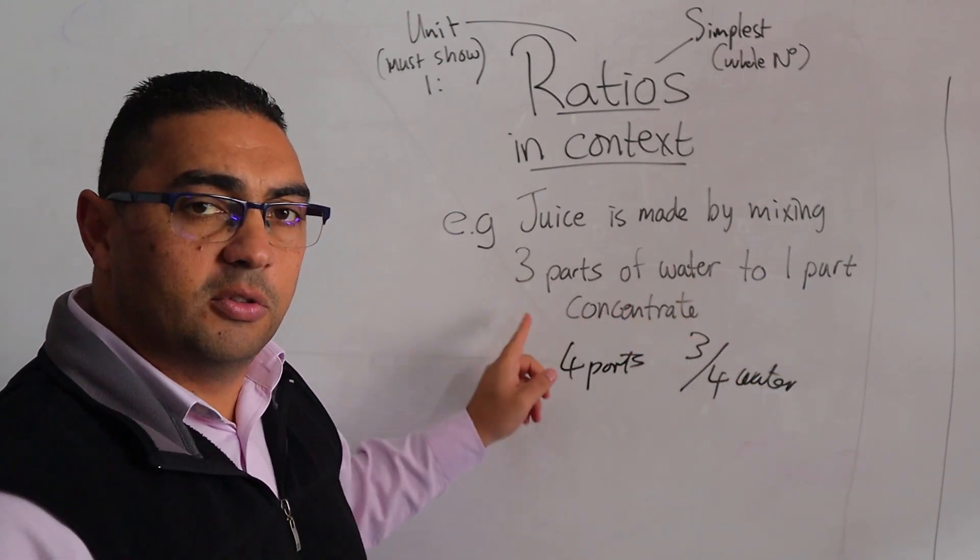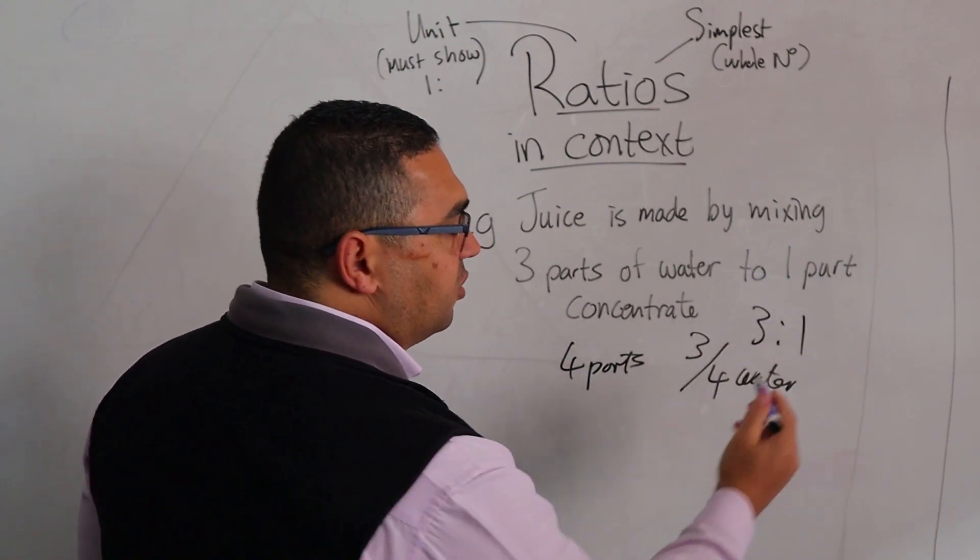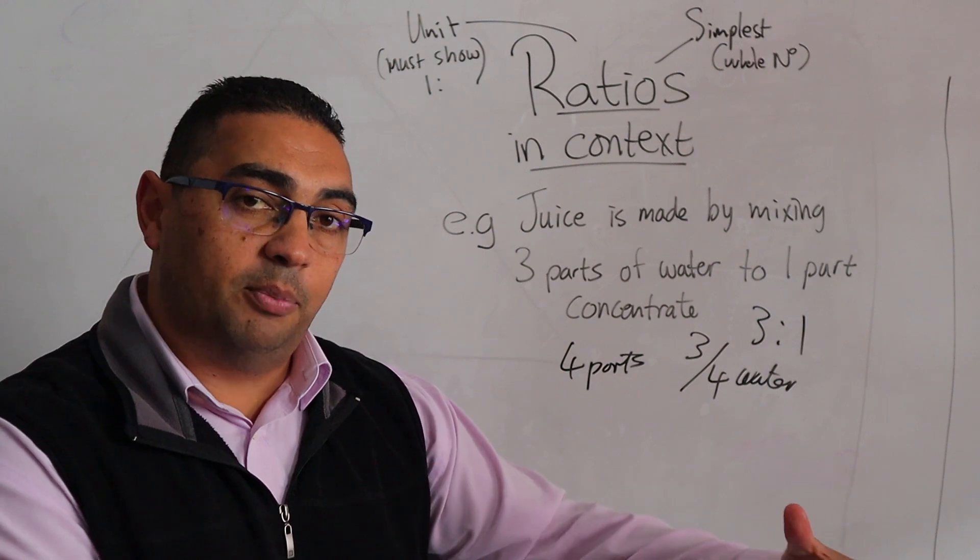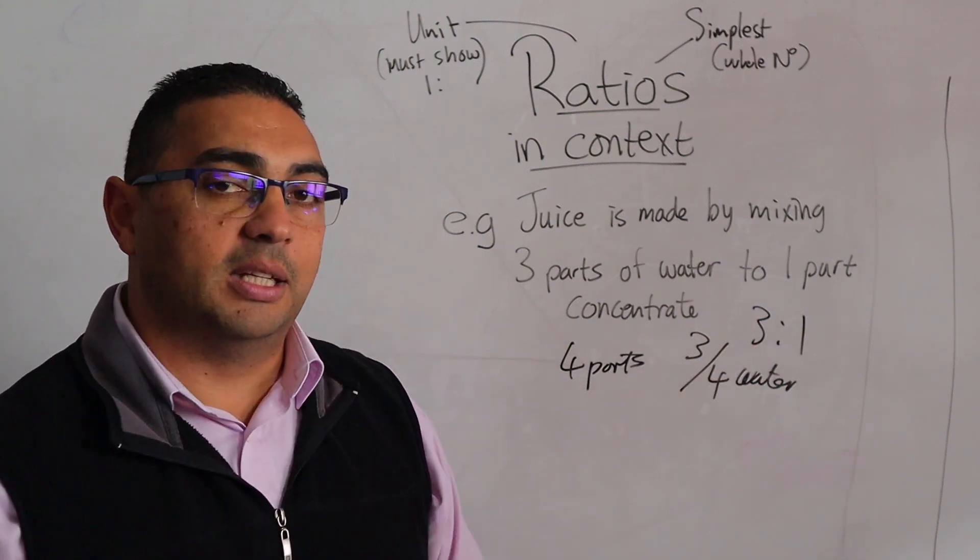Now how did I get to that denominator? By actually adding those two together. So when I look at this, it would be three is to one, a ratio of three parts water to one part concentrate, and when I add those two together, that's what gives me my denominator.